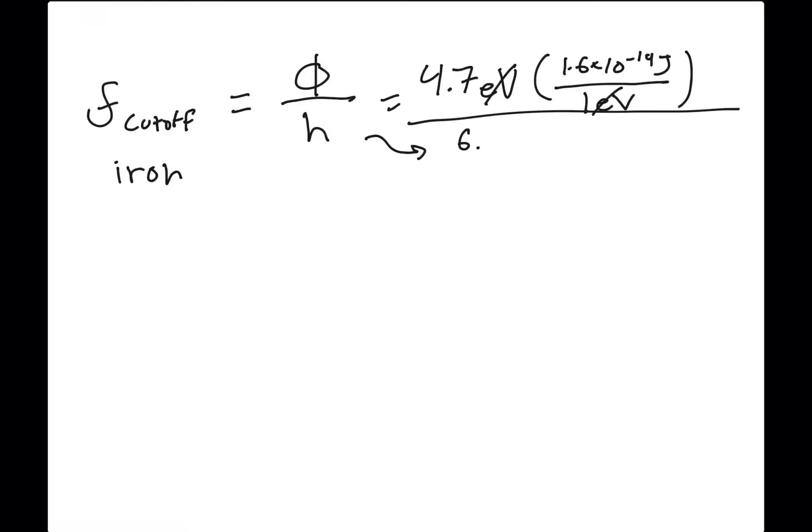H is 6.63 times 10 to the negative 34 joules times seconds. Joules are going to cancel out as well giving us 1 over seconds which is the unit for hertz and frequency.